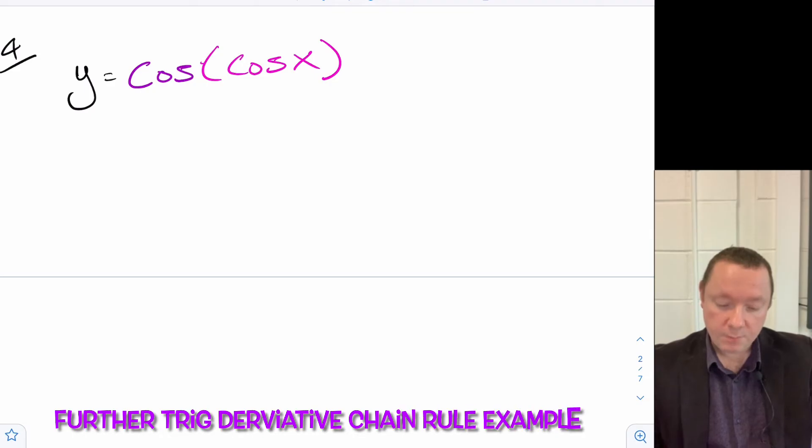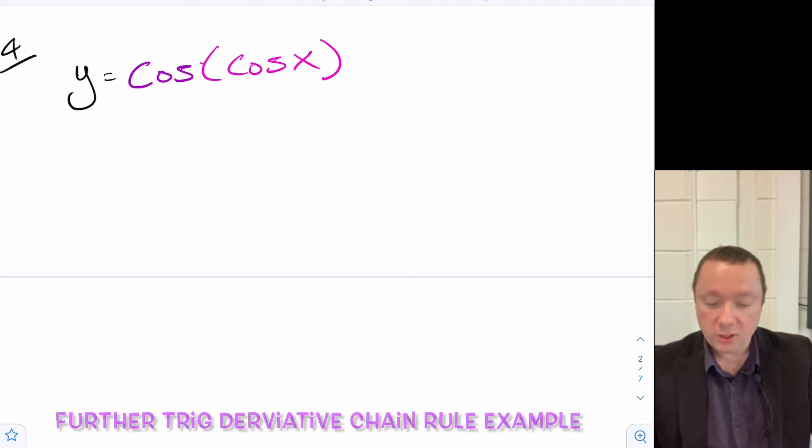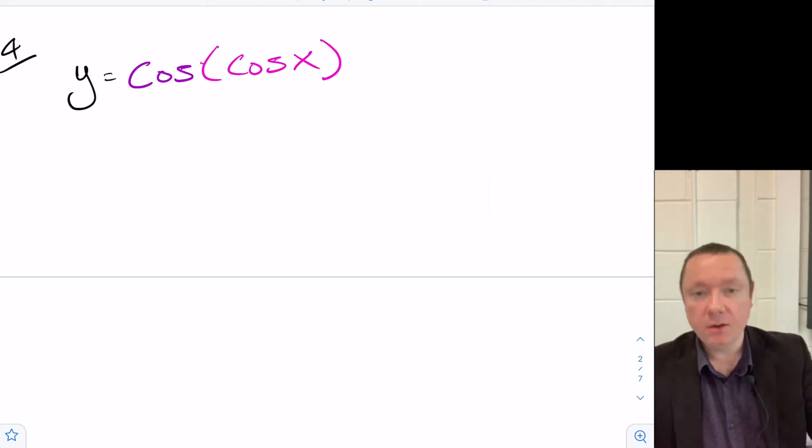So we've got another trig example. So this time I've got y equals cos of cos x. A little bit harder one, but I've kept the colours consistent so you can see what's happening. So my outer function is this cos and my inner function is just cos x.